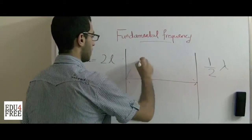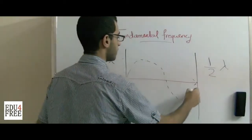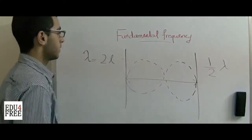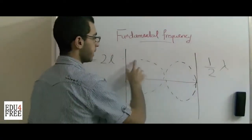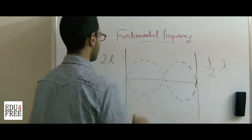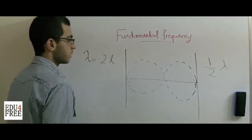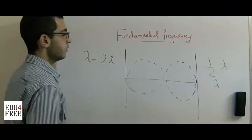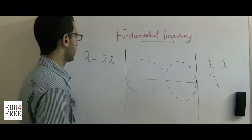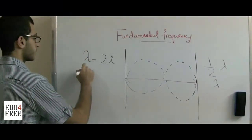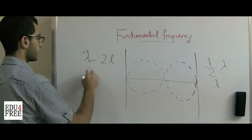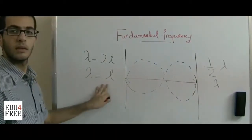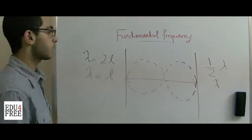Let's see another shape. Another shape may be like that, so that we have one complete wavelength. So the wavelength here equals the length of the string.